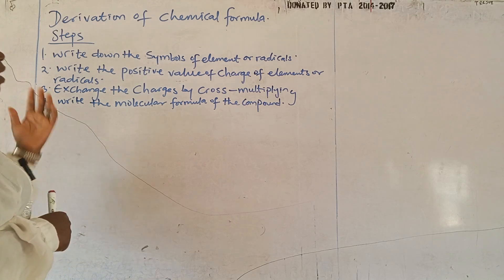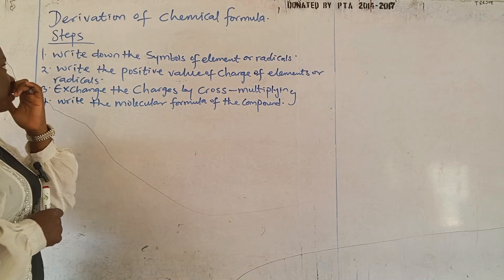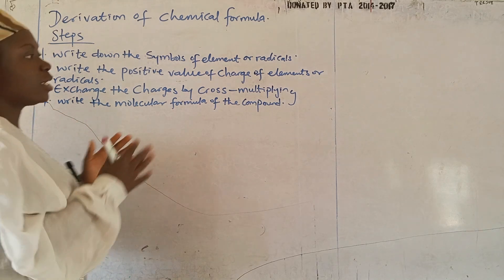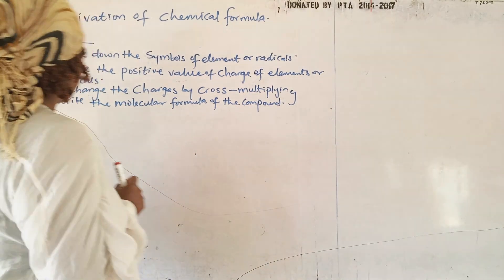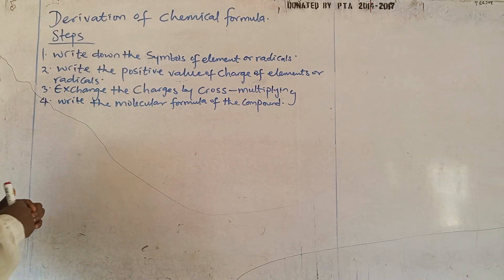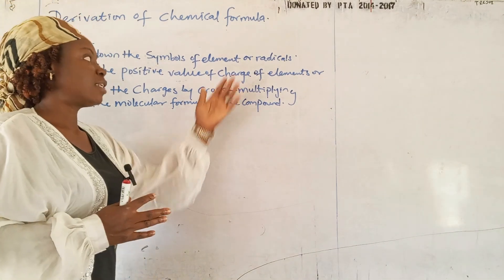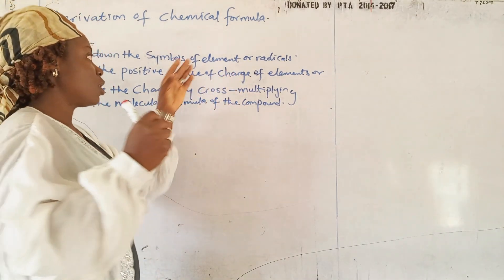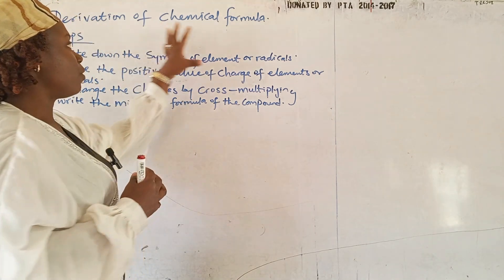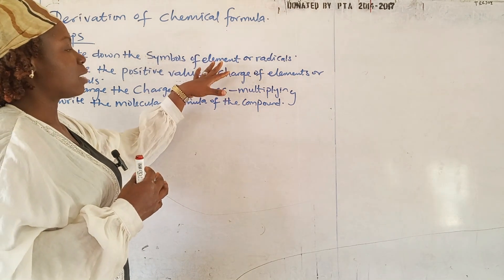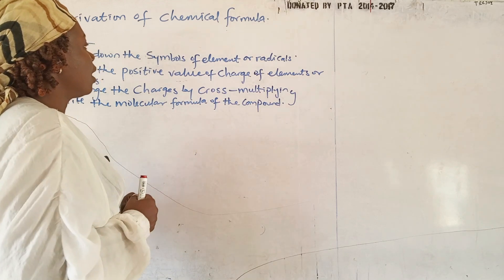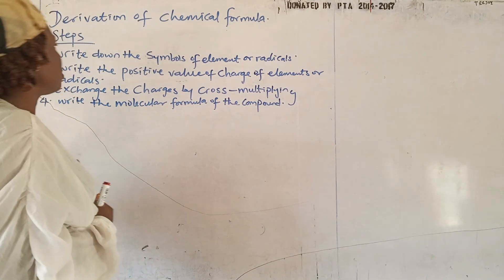For the derivation of a chemical formula, I have about four steps here, and if you follow me carefully we are not going to have issues. Step one: we are expected to write the symbols of the elements and all radicals. Radicals are a group of charged atoms. Your chemical formula can either comprise elements or radicals.